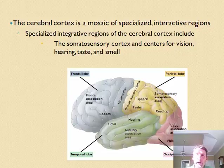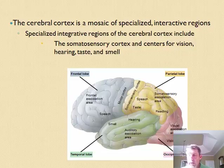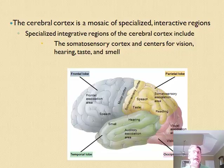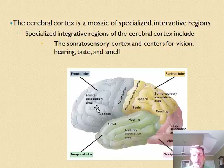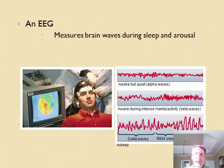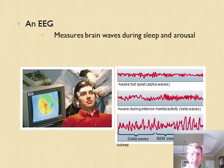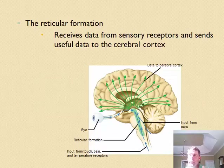These lobes are associated with specific functions like speech, taste, and vision. We know this because those areas show greater electrical activity during those activities. We also learn from damage: during a stroke, when oxygen is cut off and cells die, specific abilities like speech, hearing, or vision can be lost depending on which area is affected. Brain activity can be measured with an EEG.